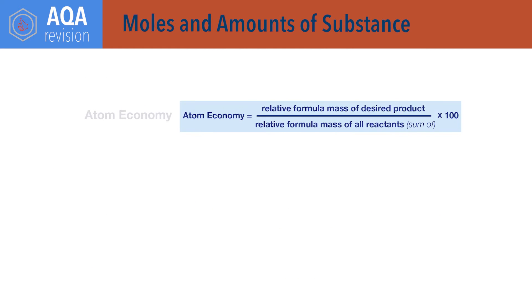Atom economy equals relative formula mass of desired product divided by the sum of the relative formula masses of all reactants, times 100.